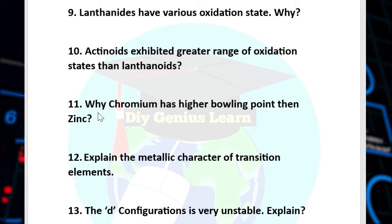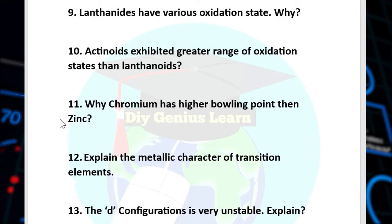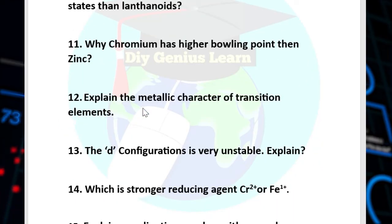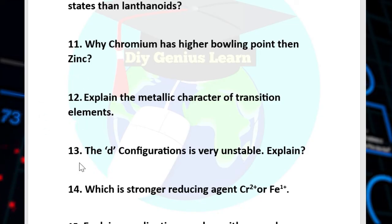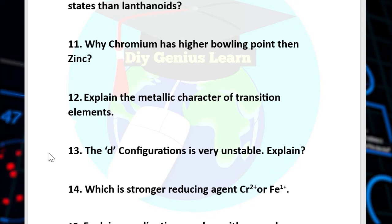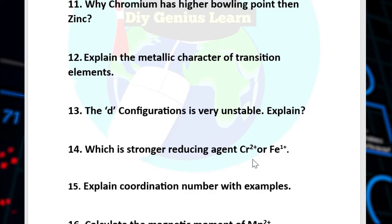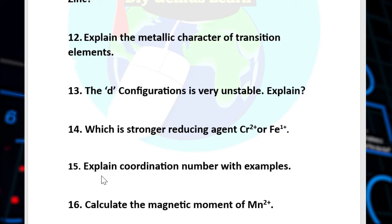Question number 11: Why does chromium have a higher boiling point than zinc? Question number 12: Explain the metallic character of transition elements. Question number 13: The D5 configuration is very unstable — explain why. Question number 14: Which is a stronger reducing agent — chromium 2+ ion or iron 2+ ion? Question number 15: Explain coordination number with example.